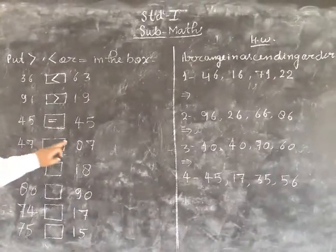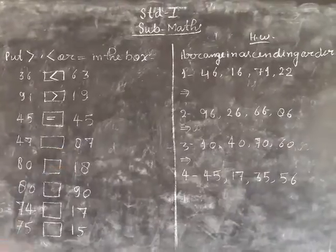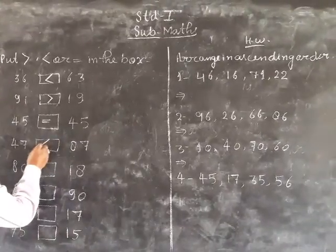47, 87. Greater number is 87. This is less than.